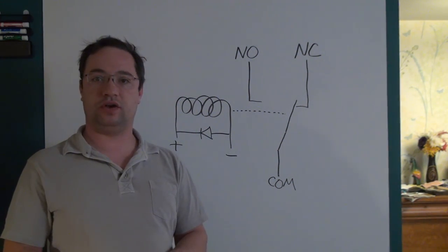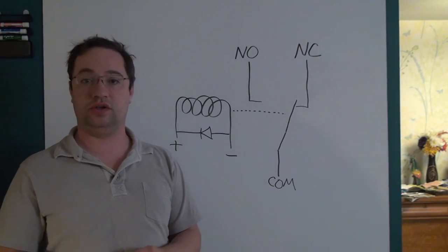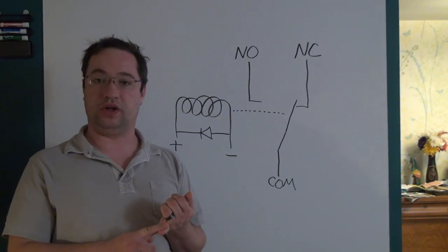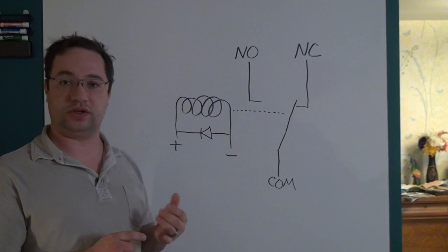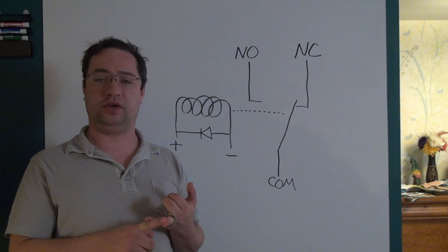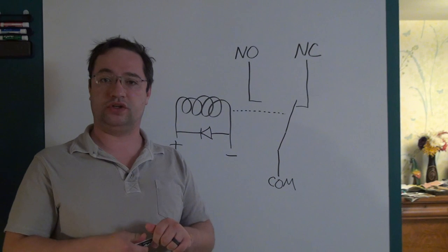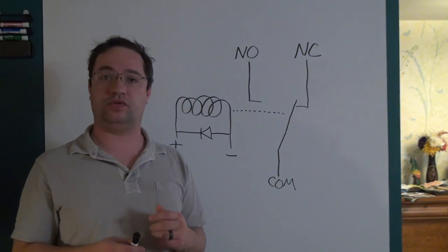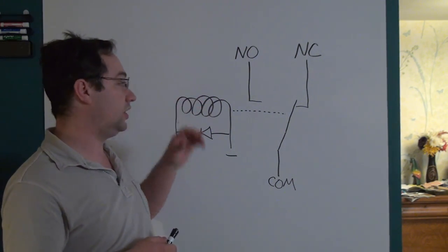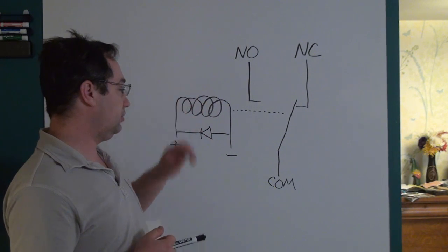Regardless of whether the control side is AC or DC, you will generally be given a voltage or voltage range that the coil can tolerate and a current rating. These are things to watch out for to make sure that whatever device you're using — like a microcontroller — can tolerate the kind of current that the coil generates.